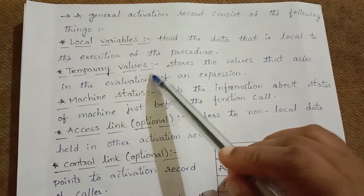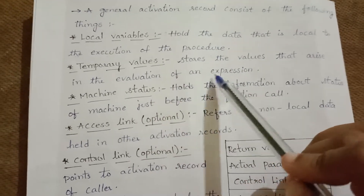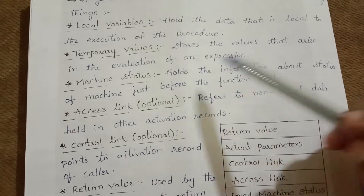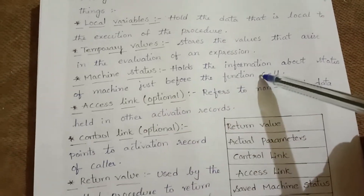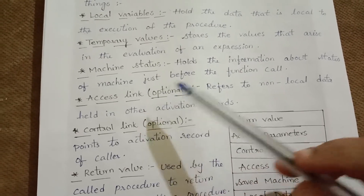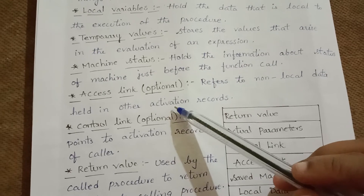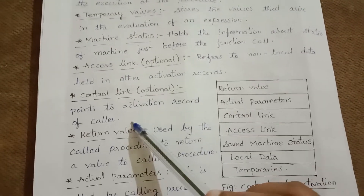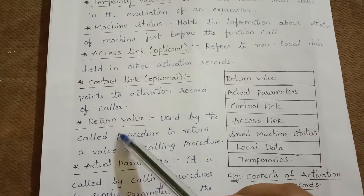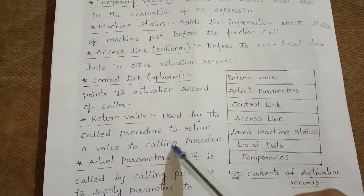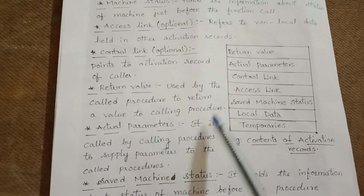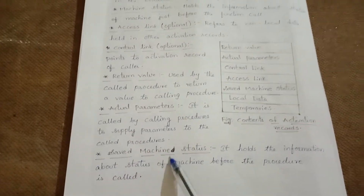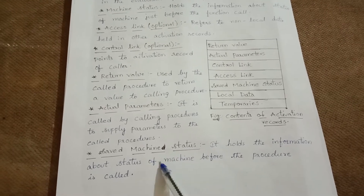Temporary values store the values that arise in the evaluation of an expression. Saved machine status holds the information about the status of the machine just before the function call. Access link is optional and refers to non-local data held in other activation records. Control link points to the activation record of the caller. Return value is used by the called procedure to return a value to the calling procedure. Actual parameters are supplied by the calling procedure to the called procedure.